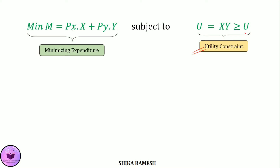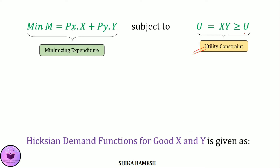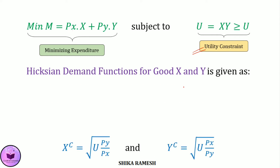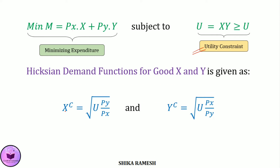We already know the Hicksian demand functions for goods X and Y. The compensated demand for good X is equal to √(U · PY/PX), and the compensated demand for good Y is equal to √(U · PX/PY).